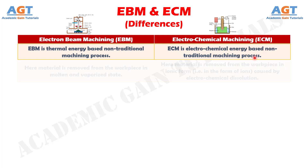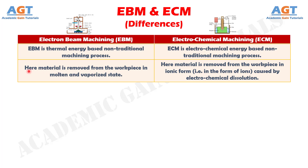Number 2: In electron beam machining, material is removed from the workpiece in molten and vaporized state, whereas in electrochemical machining, material is removed from the workpiece in ionic form, i.e., in the form of ions caused by electrochemical dissolution.